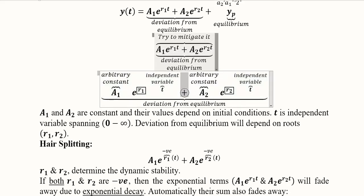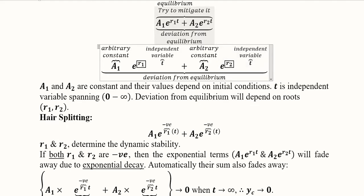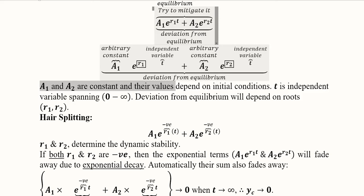yc has two parts connected by a plus sign. The first part is composed of an arbitrary constant a1 and an exponential function with the first root r1 and independent variable t. Similarly, the second part has an arbitrary constant and an exponential function with r2. Now, a1 and a2 are constants whose values depend upon the initial conditions.